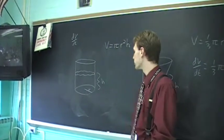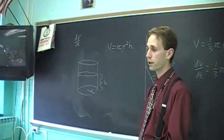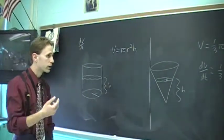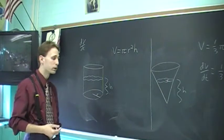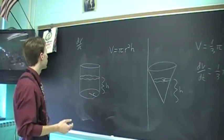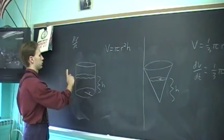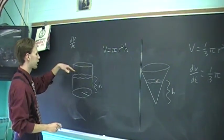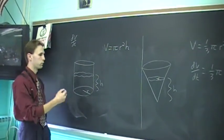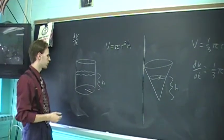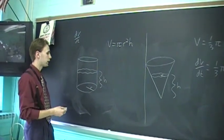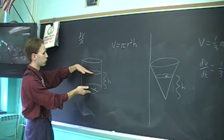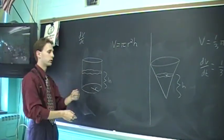Related rates problems discuss the relationships between changing quantities. For example, if you take a cylindrical shaped container and fill it up at a constant rate, if you add volume at a constant rate, you would expect that the height or depth of the fluid would be changing at a constant rate. That's just common sense.